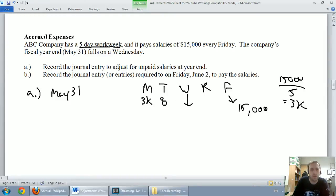So $3,000 for Monday, $3,000 for Tuesday, $3,000 for Wednesday, $3,000 for Thursday, and $3,000 for Friday. How much have they earned up to Wednesday? They've earned Monday and Tuesday for sure, and we assume our fiscal year end happens at the end of day on Wednesday, so they've earned for Wednesday. Our employees have earned $9,000 worth of salaries for which they've not been paid.